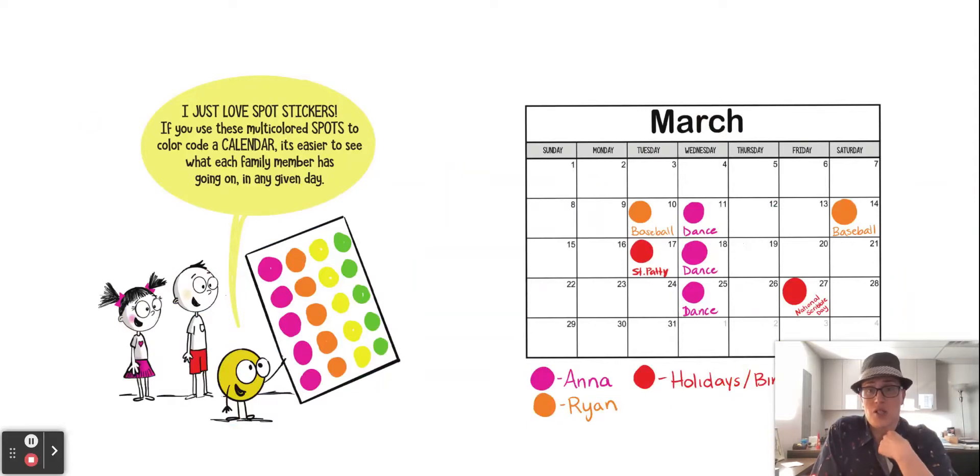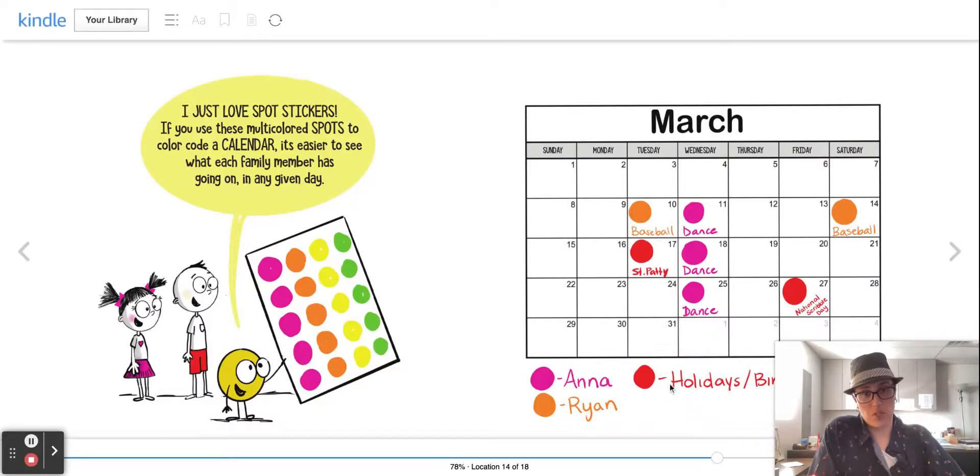I just love spot stickers. You can use these multicolored spots to color code a calendar. It's easier to see which family member has going on which day when you know which spot represents which person.